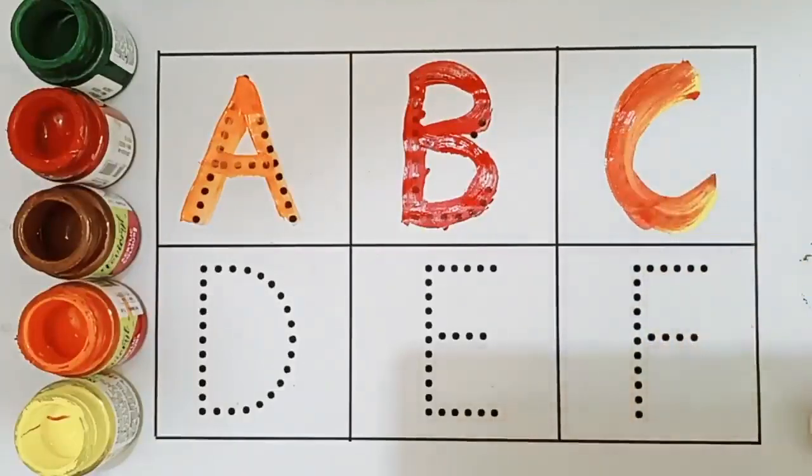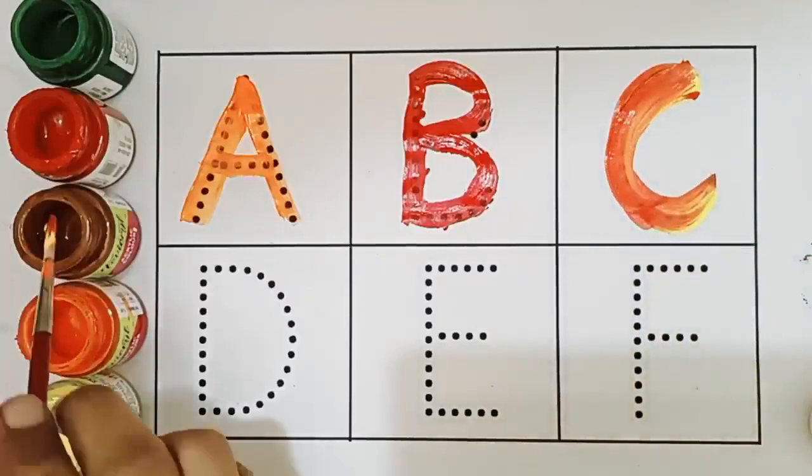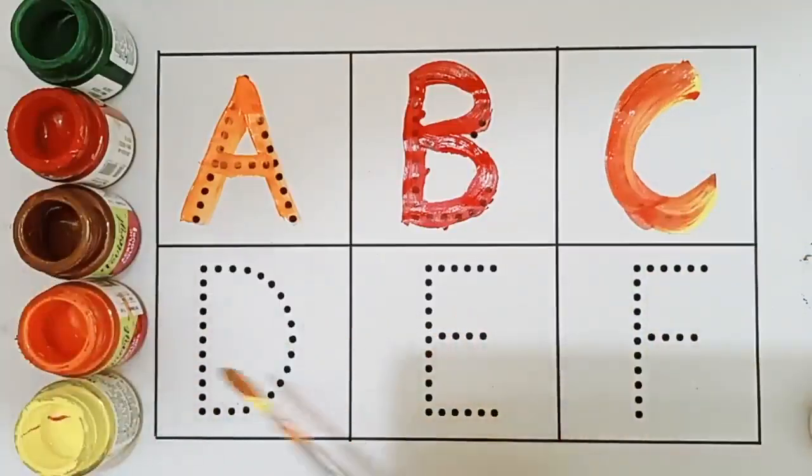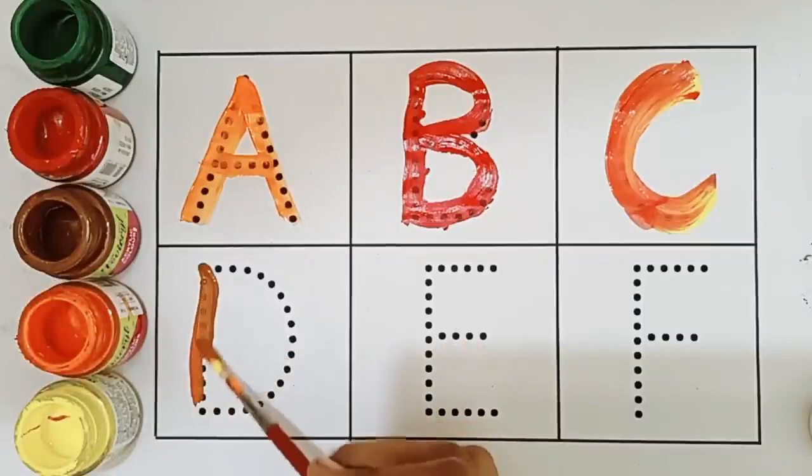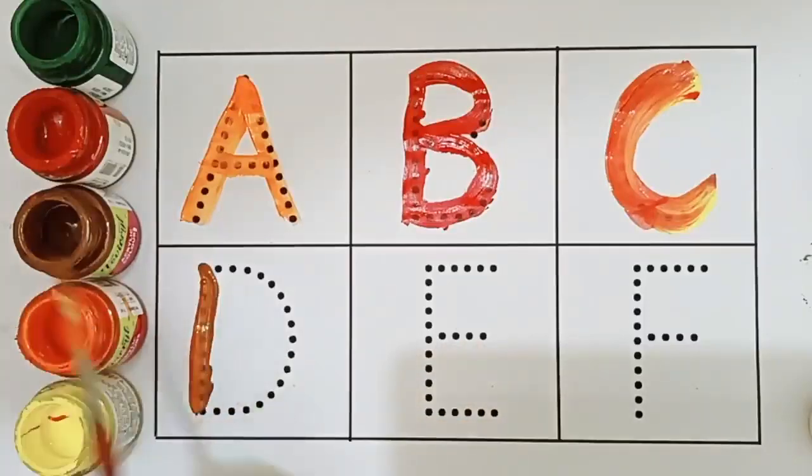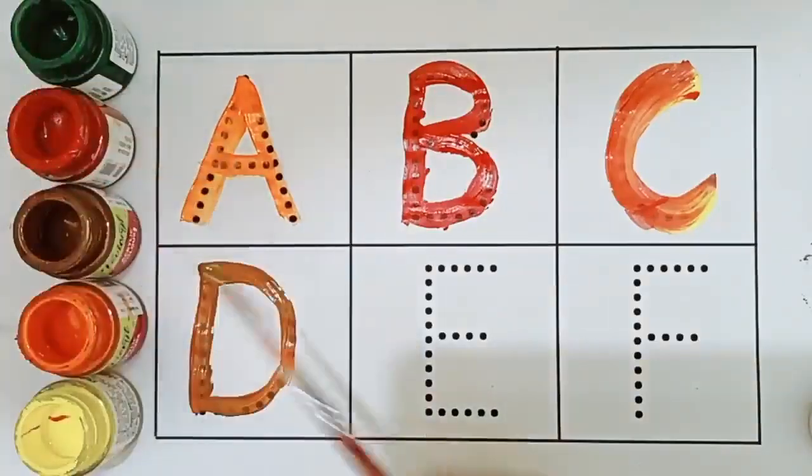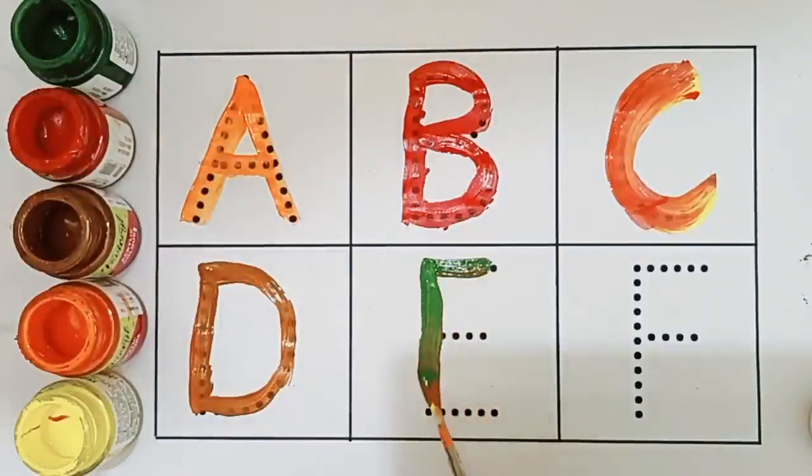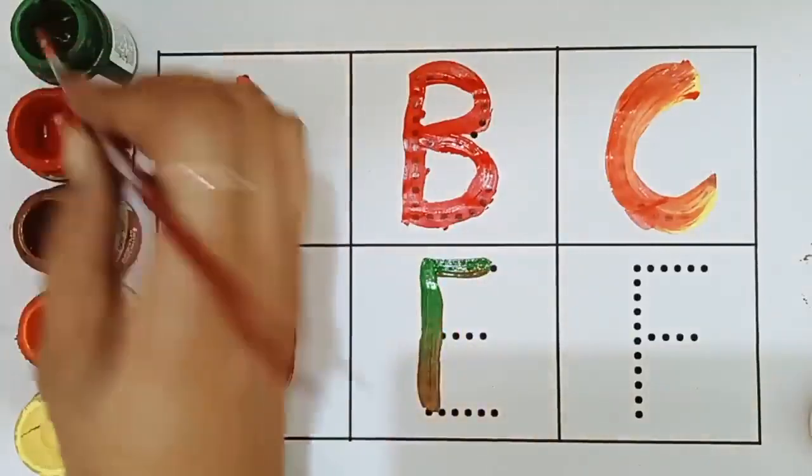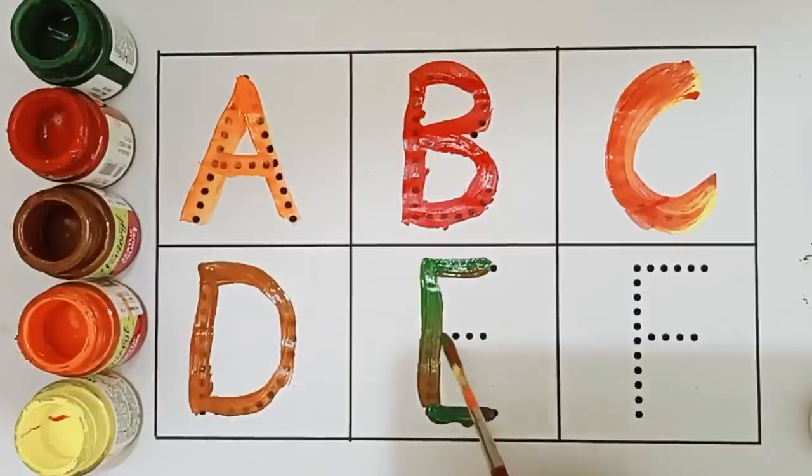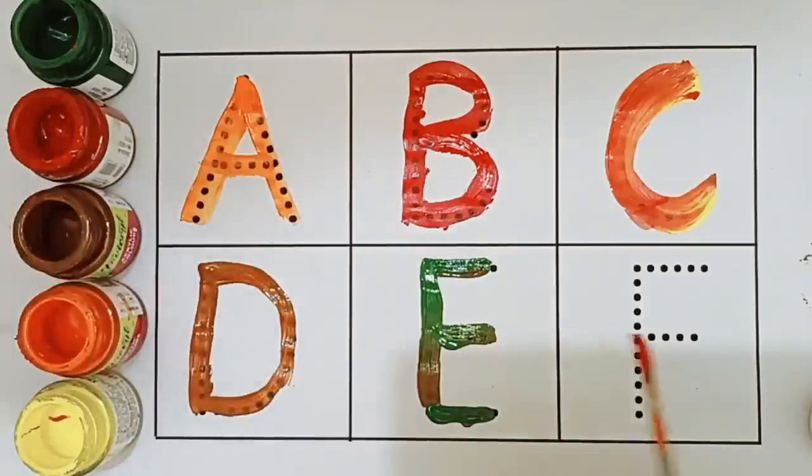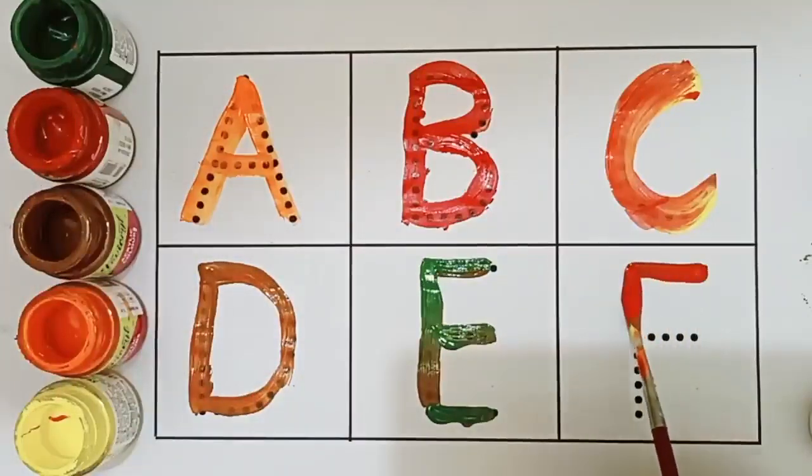Red color. Red and yellow mix brown color. D, D for dog. Green color. E, E for elephant. F, F for fish. Red color.